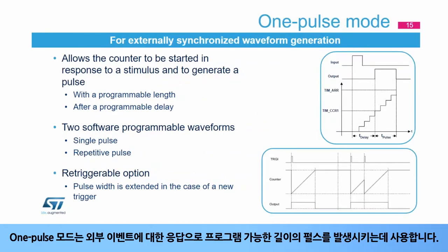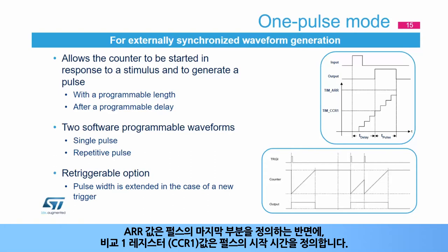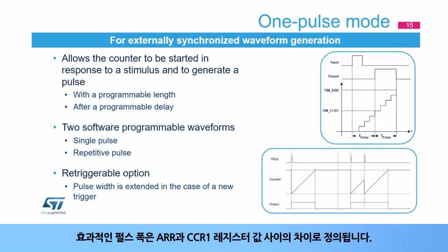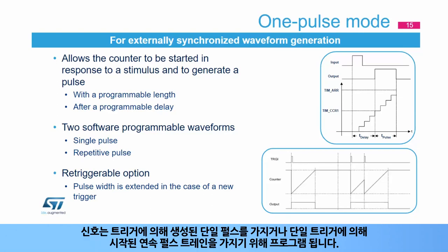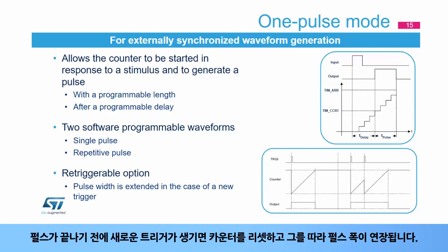One pulse mode is used to generate a pulse of a programmable length in response to an external event. The pulse can start as soon as the input trigger arrives, or after a programmable delay. The compare one register CCR1 value defines the pulse start time, while the auto-reload register ARR value defines the end of pulse. The effective pulse width is the difference between the ARR and CCR1 register values. The waveform can be programmed for a single pulse or a continuous pulse train started by a single trigger. One pulse mode also offers a re-triggerable option: a new trigger arriving before the end of the pulse will cause the counter to be reset and the pulse width extended accordingly.